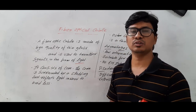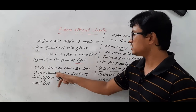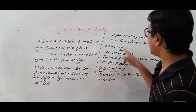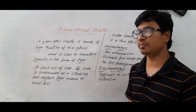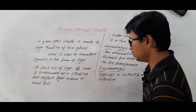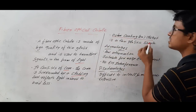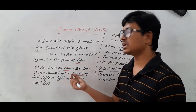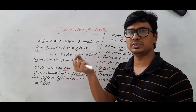A fiber optical cable consists of the core, cladding, and outer coating. If you look at the structure, you will see three major parts: the core, the cladding, and the outer coating or jacket. The core consists of thin lines similar in diameter to human hair.